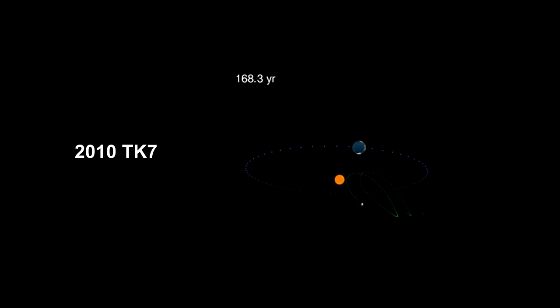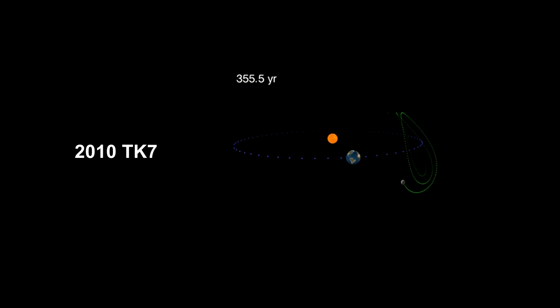Here we see an animation of 2010 TK7's orbit. The clock shows how the orbit changes over time. Over the next 10,000 years, it will not approach Earth any closer than 20 million kilometers. That's 50 times further away than the Moon.